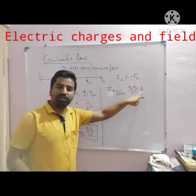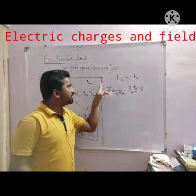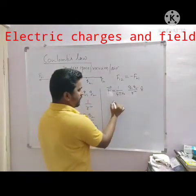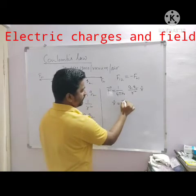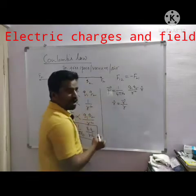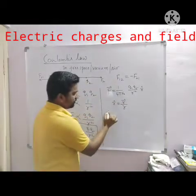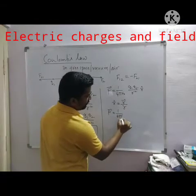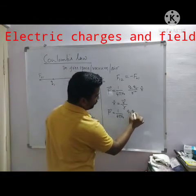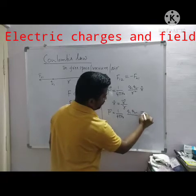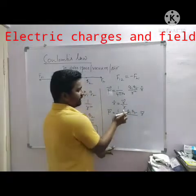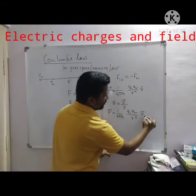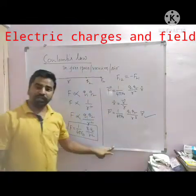R-cap is a unit vector which indicates the direction of the force. R-cap can be written as R vector divided by the magnitude of R. So the force F is given by 1 divided by 4 pi epsilon naught times Q1 times Q2 times R vector divided by R cubed. This is Coulomb's law in vector form.